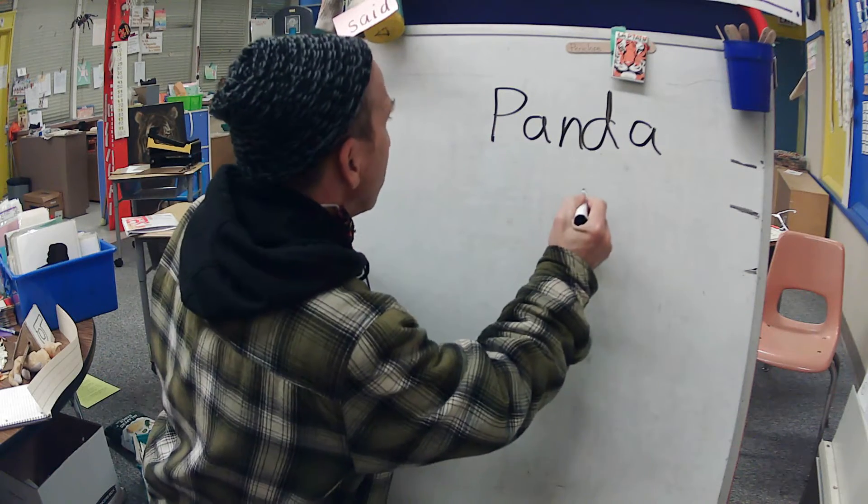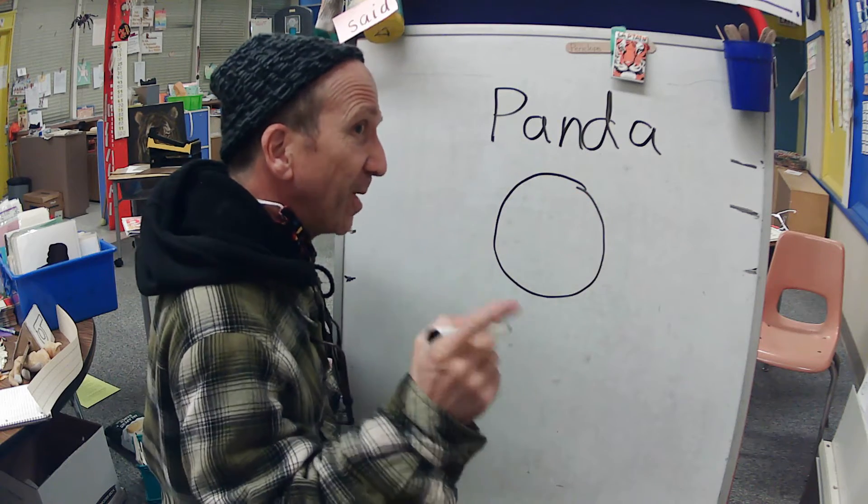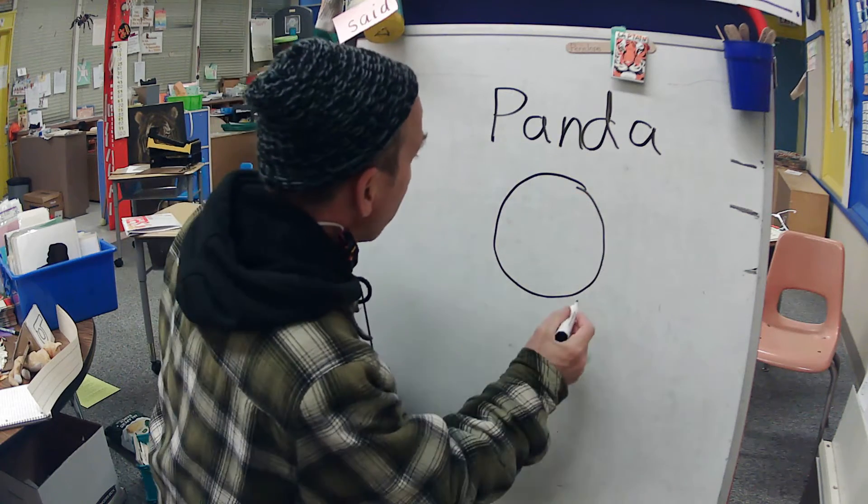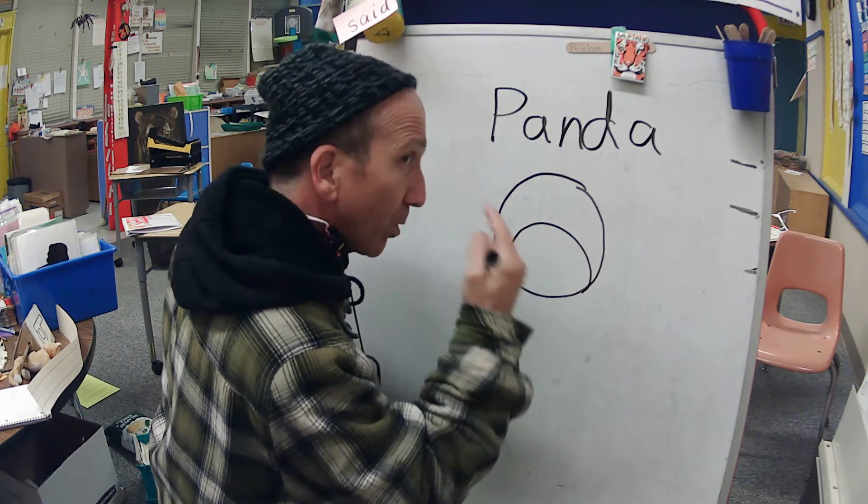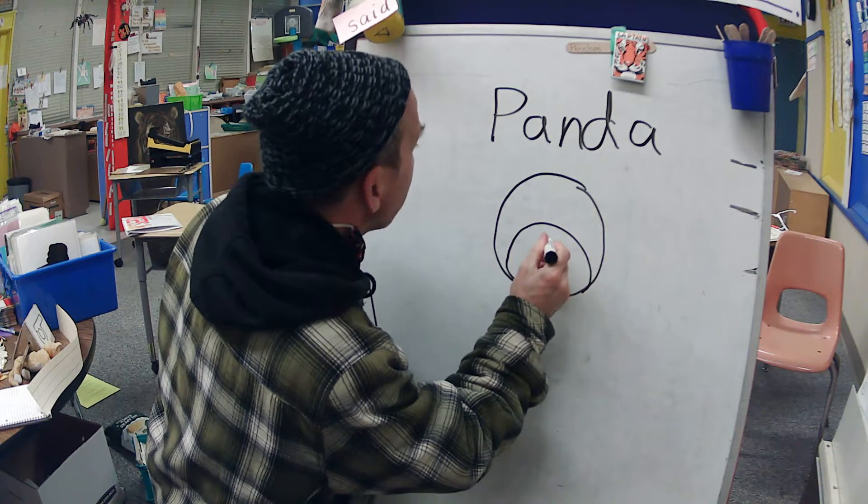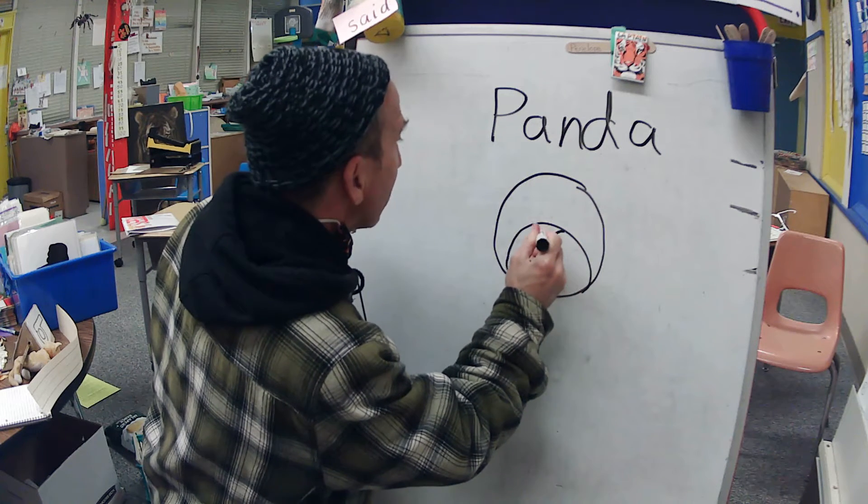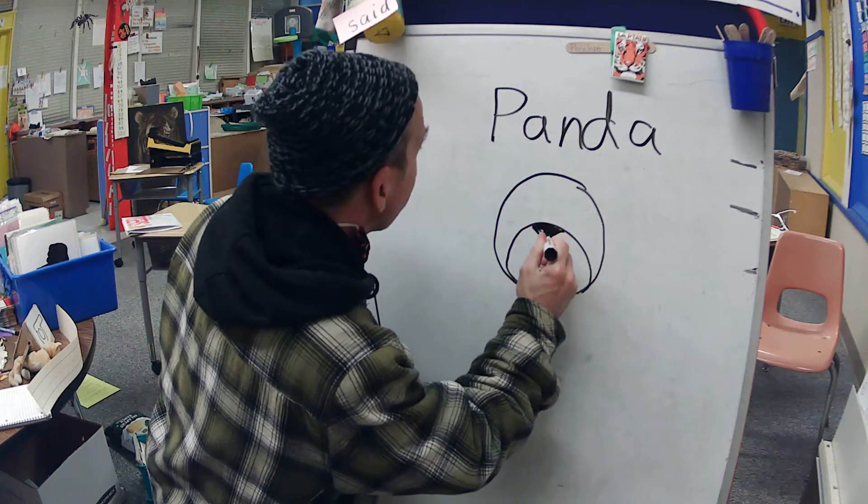Step number one: show me the big circle. Pandas have big heads. They also have a muzzle—that's the round part where the nose is. At the top of the muzzle, if you put a little dot there and go like that and like that, you can make the panda's nose. It looks kind of like the letter V.